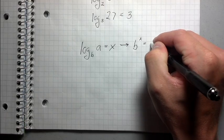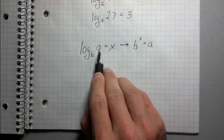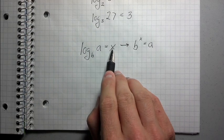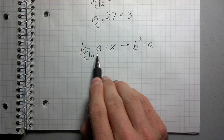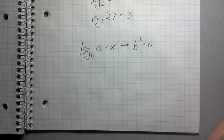B to the X power equals A, right? Base, the power of whatever this number is, equals the argument. And the question that a logarithm is asking you is, what does this X need to be so that when you raise B to that power, whatever it is, it equals A? That's basically it.